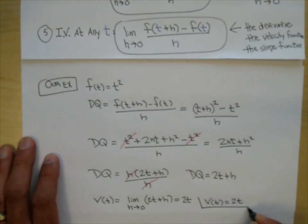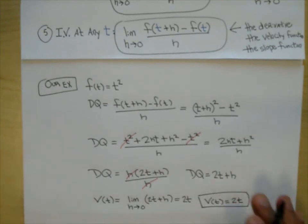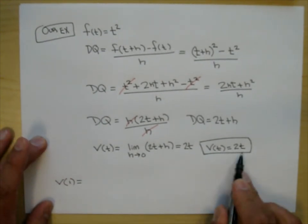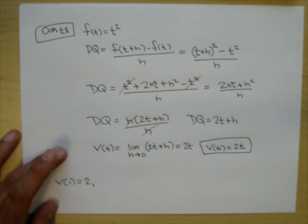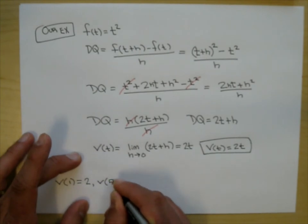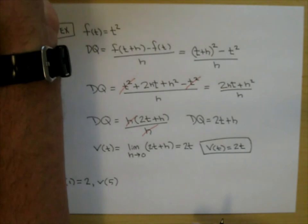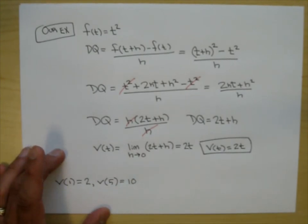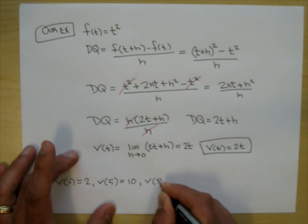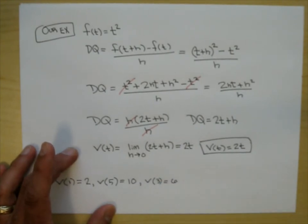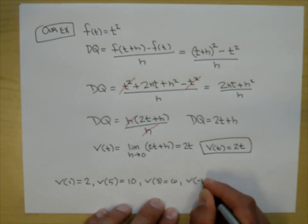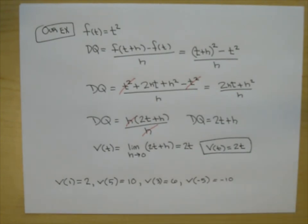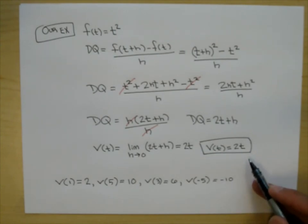This gives us the velocity at any time, and that's what makes us really happy. At time 1 — the one where we took a guess — you put 1 in: 2 times 1 is 2. At time 5: 2 times 5 is 10. At 3 seconds: 6. At negative 5 seconds: negative 10. At 2.5 seconds: just plug it in and get the instantaneous velocity. This is why we learned limits and difference quotients.